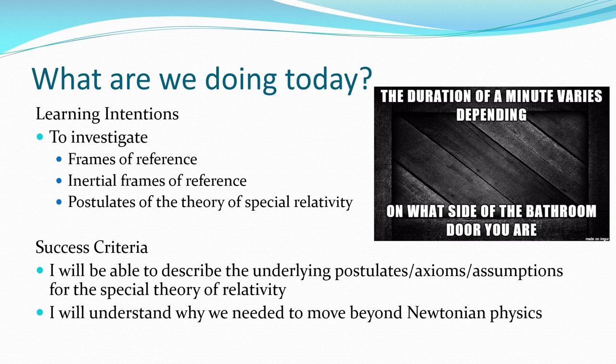In this chapter we're going to look at frames of reference or in particular inertial frames of reference which a lot of the time I'll abbreviate to IFR, inertial frame of reference or inertial reference frame. And we'll look at the postulates for the theory of special relativity. What do I mean by postulates? By the end of this you should be able to describe the underlying axioms or assumptions that special relativity is based on and understand why Newtonian physics wasn't really doing its job anymore and how we found many examples of how it just didn't quite hold true under a lot of circumstances.